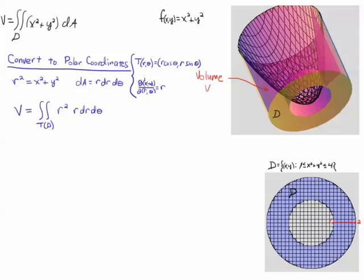And recall that the Jacobian of this transformation is r, so we have x squared plus y squared equals r squared, and the little area element gets transformed from dA to r dr d theta, and we multiply it by the Jacobian, which is r.